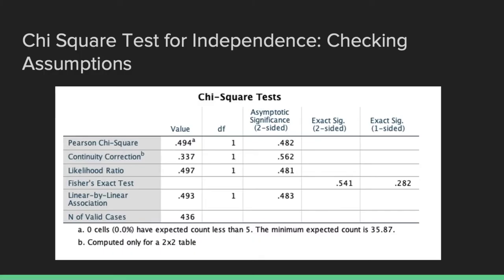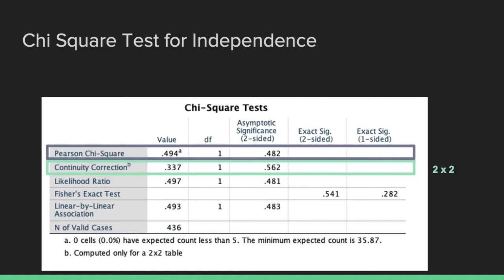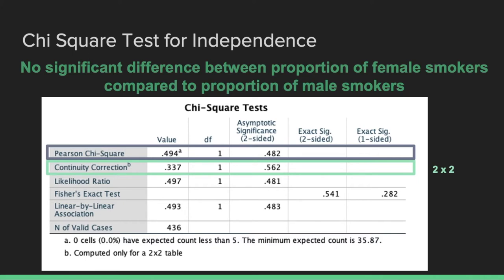The table you want to look at is the chi-square tests box. First, check the lowest expected frequency assumption — ours is 35.87, which is well above the minimum value of 10 required for a two-by-two setup. When you have a two-by-two setup, look at the continuity correction. We get a chi-square statistic of 0.337 and a p-value of 0.56, which is greater than the significance threshold of 0.05, so it's not significant. If you have a setup that is not a two-by-two configuration, look at the Pearson chi-square statistic. Overall, this table tells us there is no significant difference between the proportion of female smokers and the proportion of male smokers.